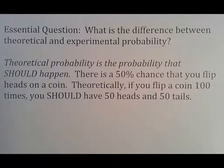So what is the difference between theoretical and experimental probability? It looks like I did my job when I made this a year ago. Theoretical probability is something that should happen. So there's a 50% chance that you flip heads on a coin. Theoretically, if you flip a coin 100 times, you should have 50 heads and 50 tails.